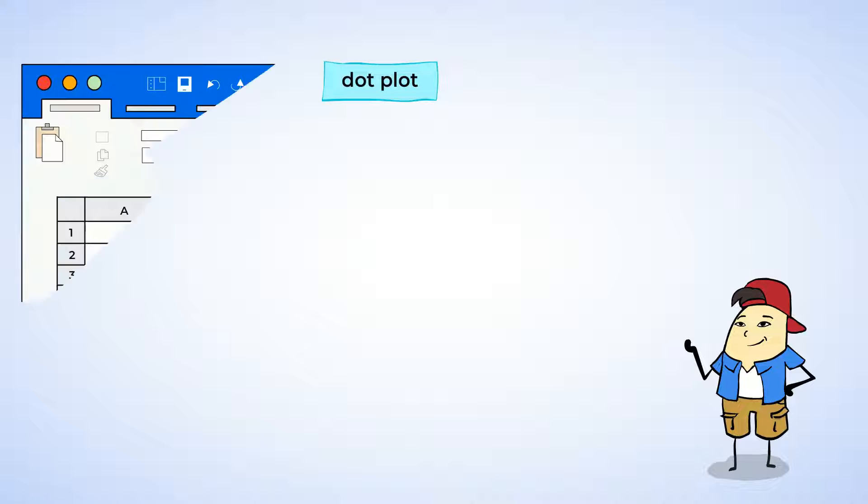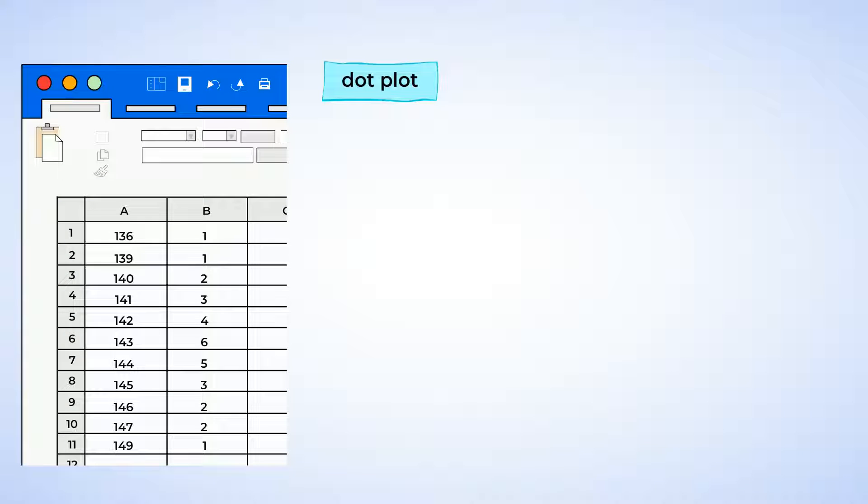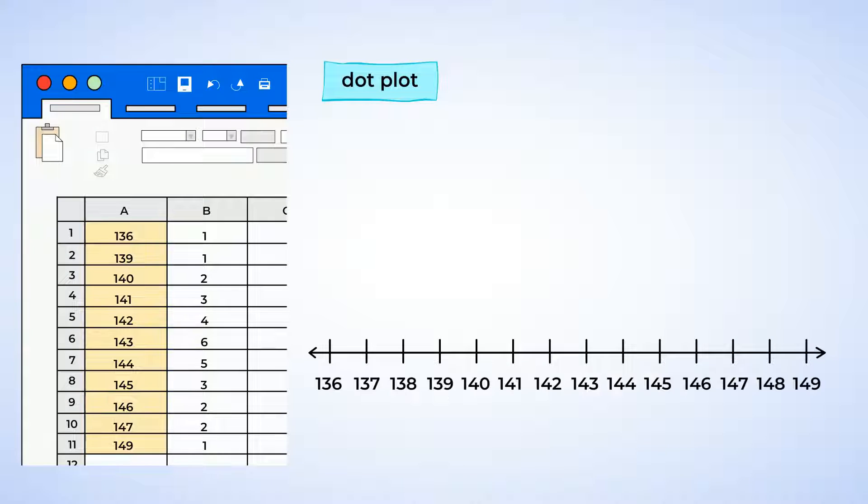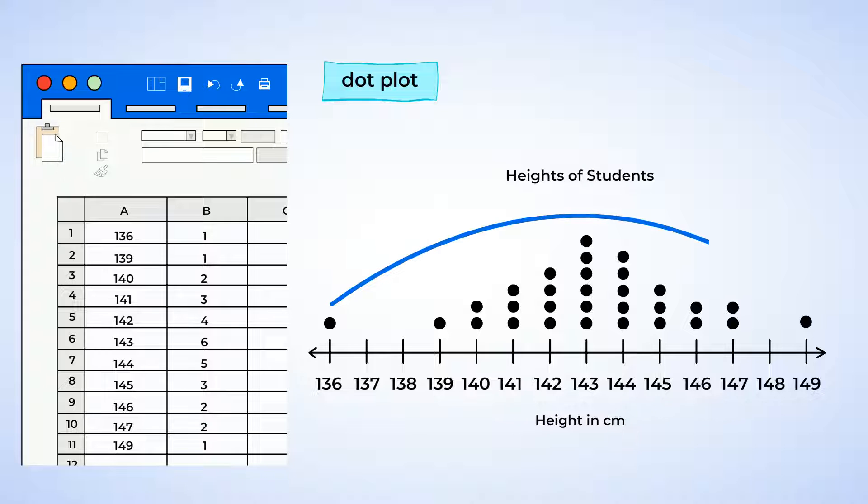Now, let's put together Chen's data in a dot plot. The x-axis shows the different heights in centimeters. Each dot here represents the number of people at a specific height, and we can see that this data is symmetrical.